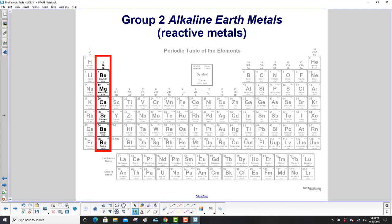Group 2 contains the alkaline earth metals. They are reactive, but not as reactive as group 1, which was hydrogen, lithium, etc. Here we have beryllium, magnesium, calcium, strontium, barium, and radium.